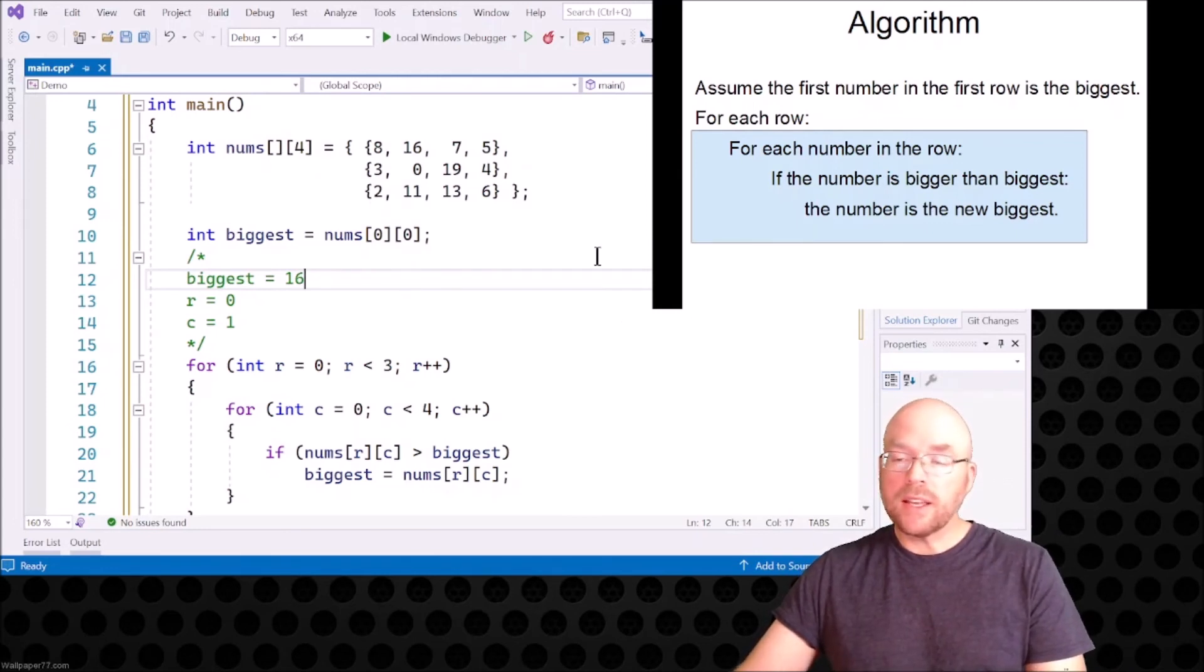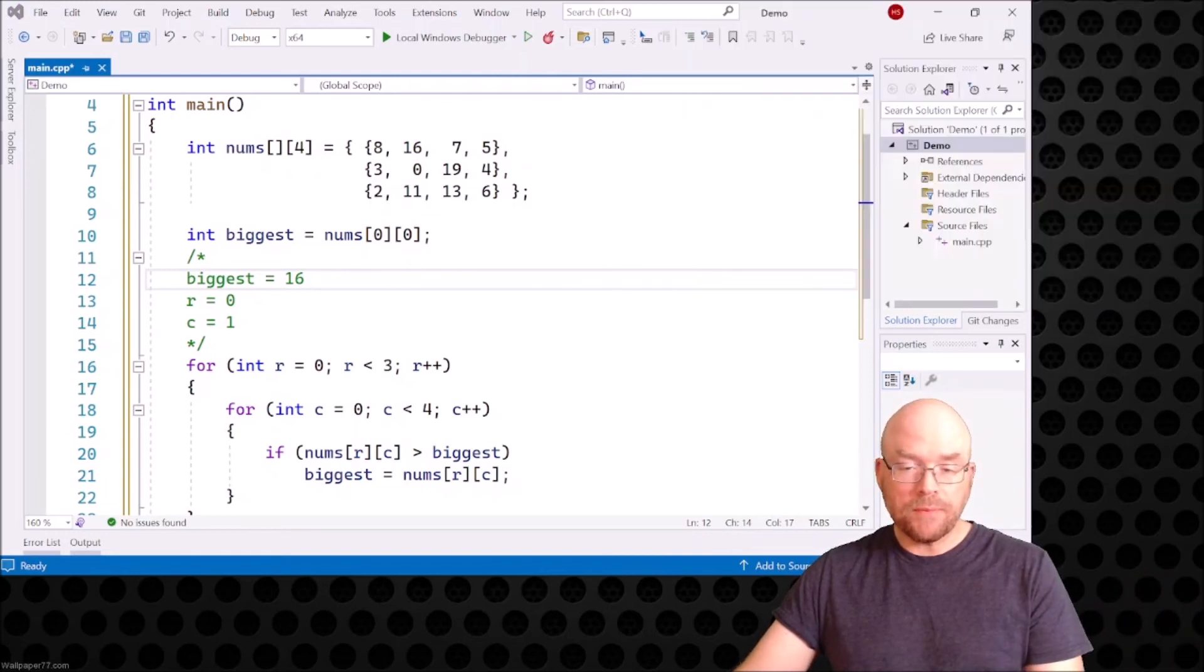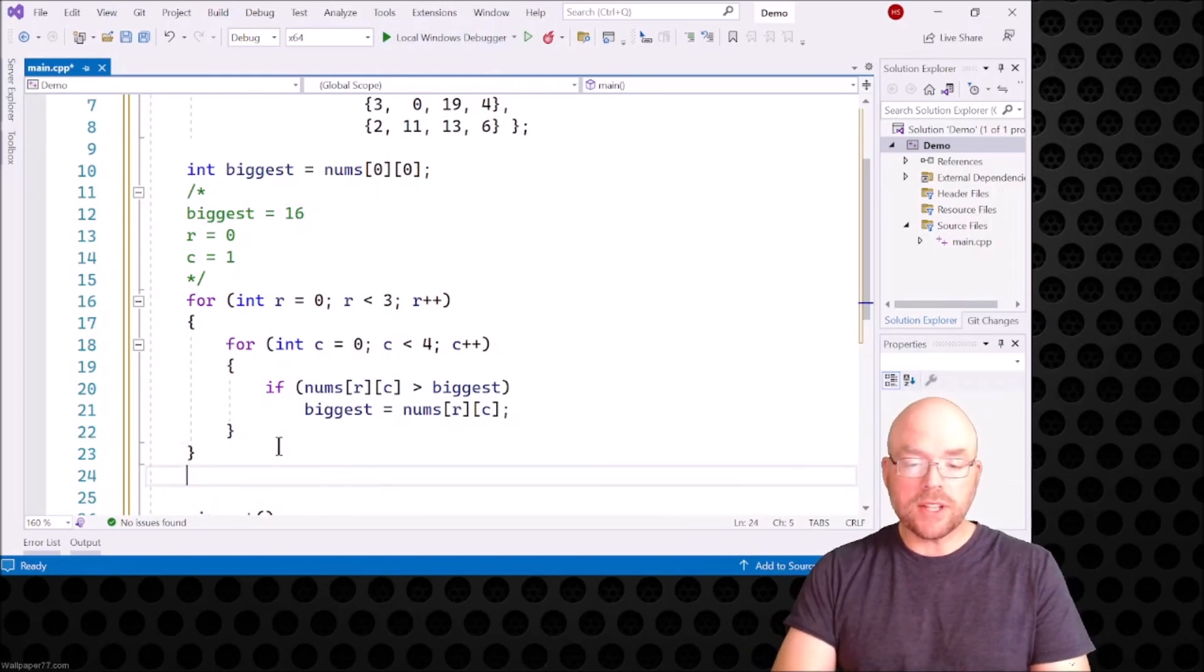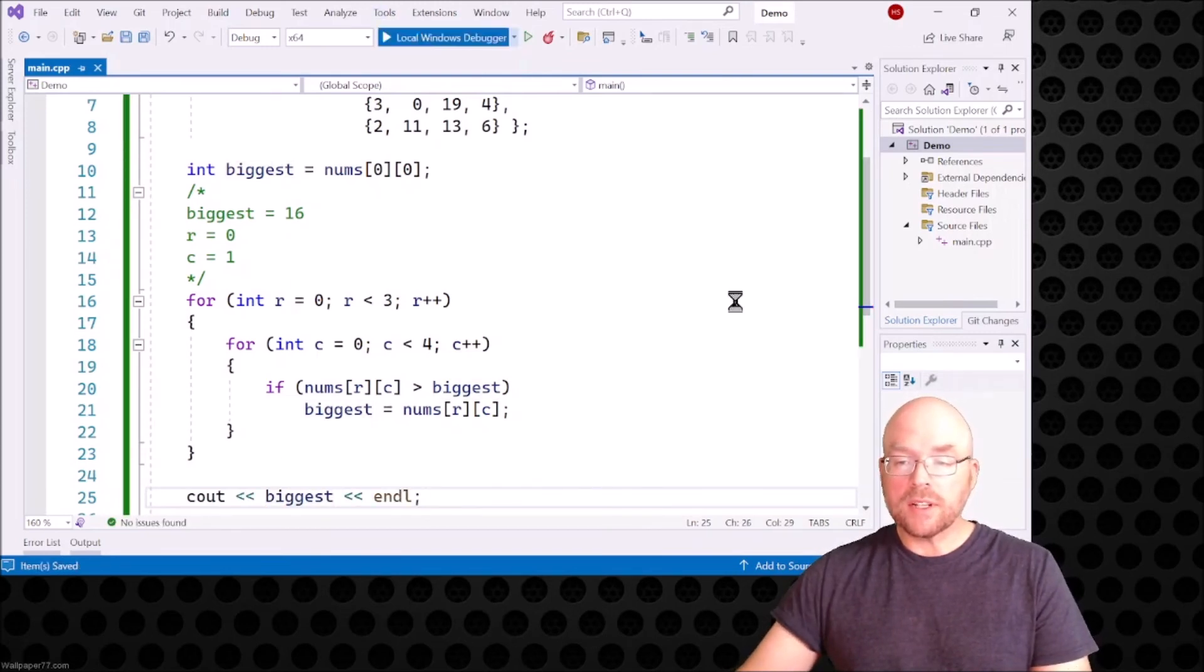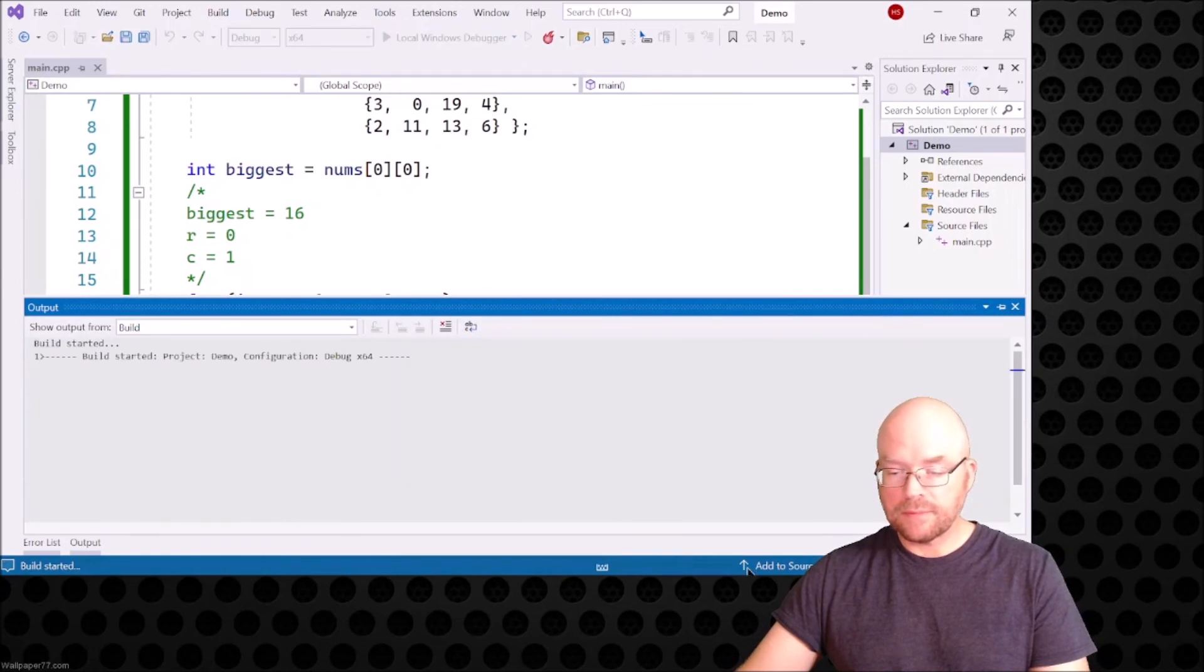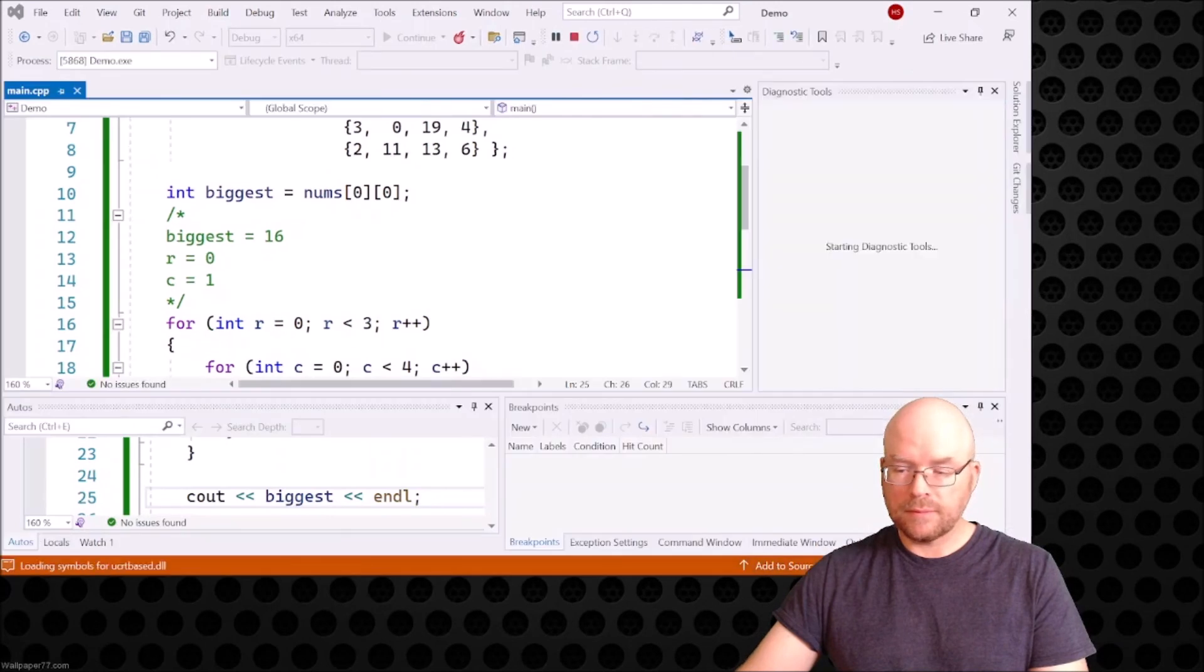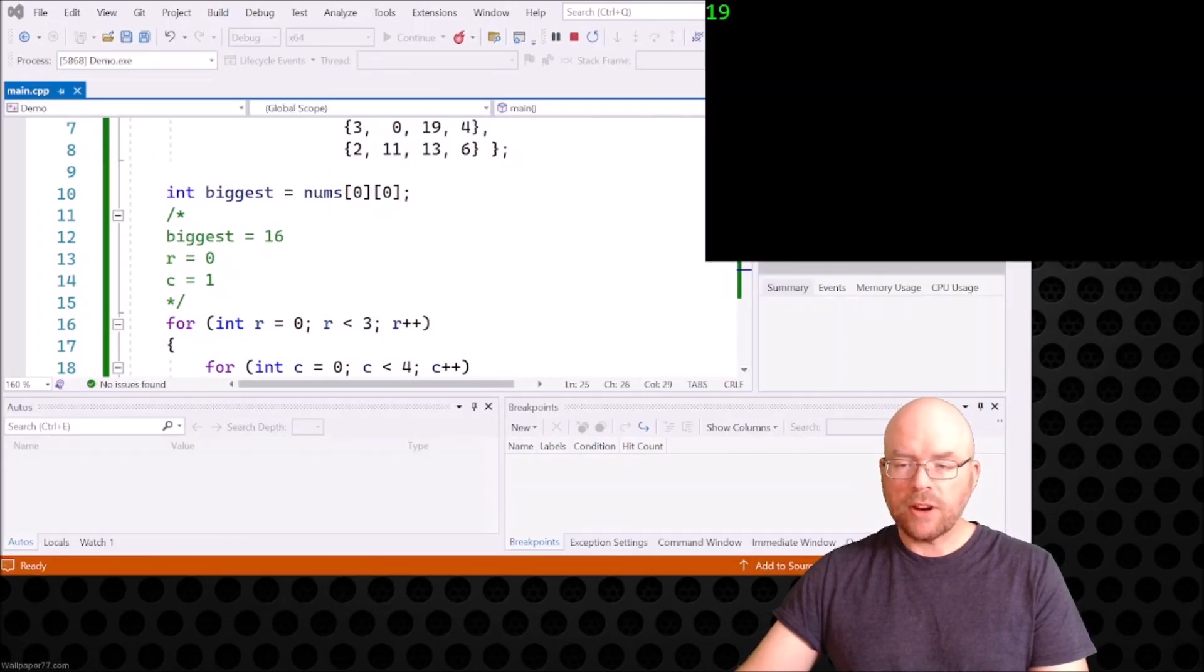Let's go ahead and run it just to make sure that we get it. At the very end, we'll just do a little C out here that says C out biggest. You can see the 19 and everything works just as we had planned, just as we had hoped.